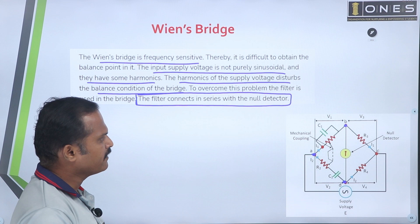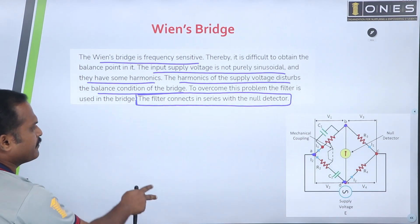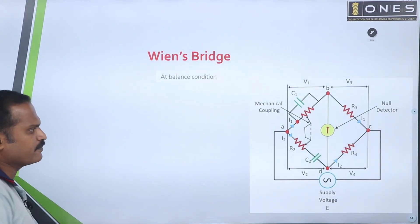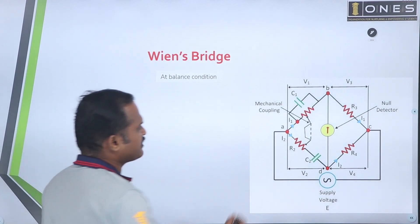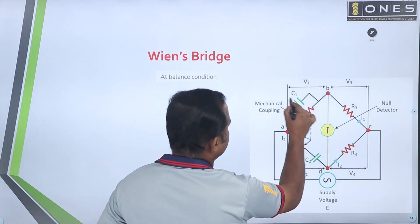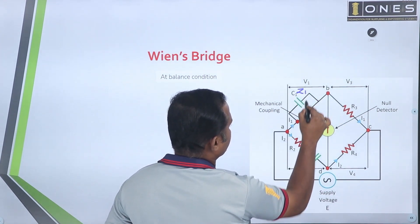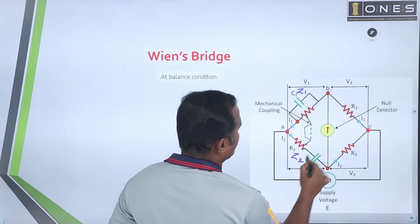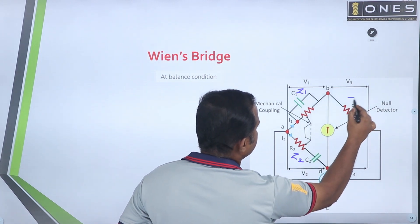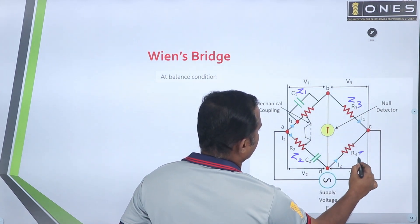Now, how do we keep the balance condition? Let us take the case. We have set 1, set 2, set 3, and set 4 for the four arms of the bridge.